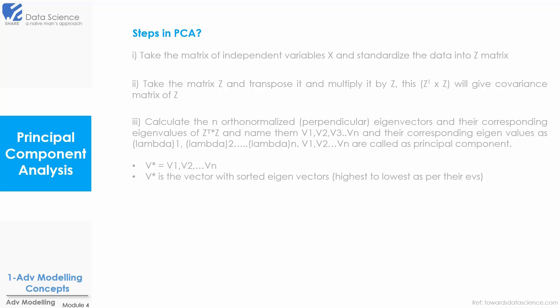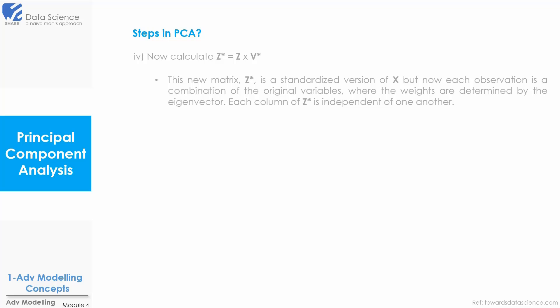Now we will name them as v1, v2, v3 up to vn and name their corresponding eigenvalues as lambda1, lambda2 up to lambda n. Now v1, v2 up to vn are called as principal components. These vectors of eigenvectors are sorted from highest to lowest and we can name it as v star. Now in the next step we calculate z star as z into v star. This new matrix z star is a standardized version of x but now each observation is a combination of the original variables where the weights are determined by the eigenvectors. Each column of z star is independent of one another.